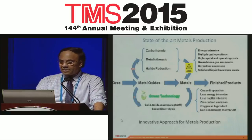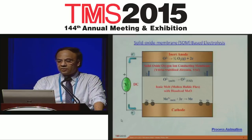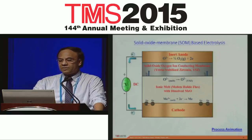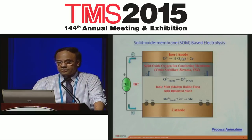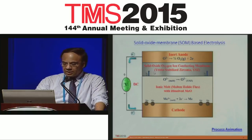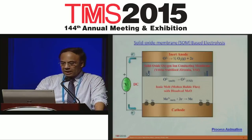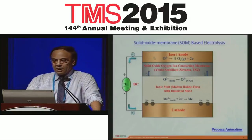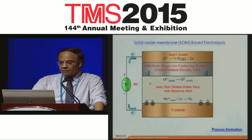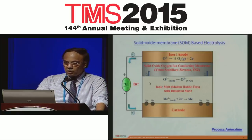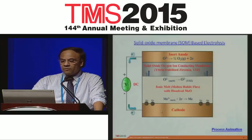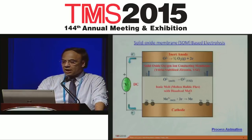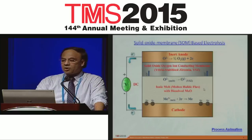Here is a schematic of the process. The heart of the process is yttria-stabilized zirconia, which at temperatures over 900 degrees centigrade conducts oxygen ions. On one side of this membrane we have the inert anode, and on the other side we have a molten salt or halide flux which dissolves the oxide that we would like to reduce. In this salt we have a cathode, and when the applied potential exceeds the dissociation potential of the metal oxide, the metal is reduced at the cathode and the oxygen ions migrate through the membrane and are oxidized at the anode.